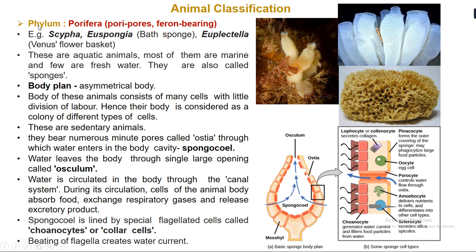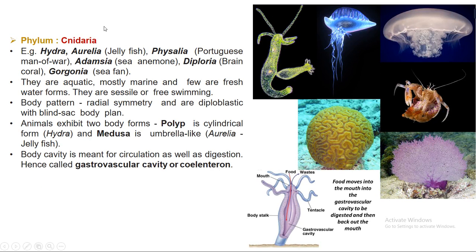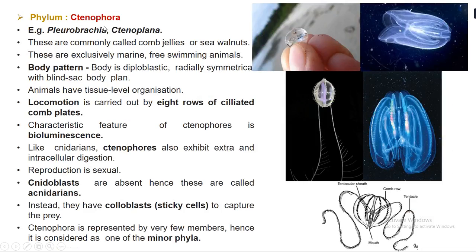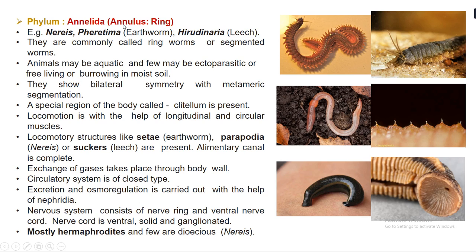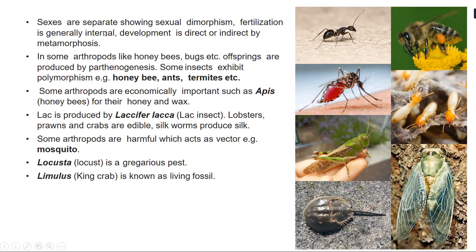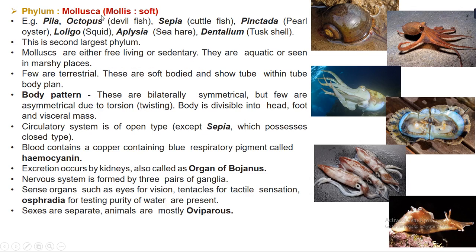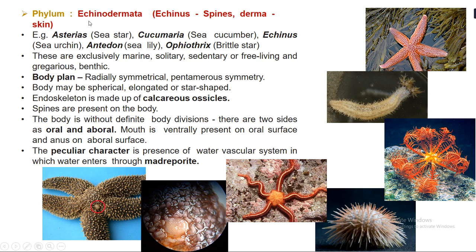We studied about some of the phylums included in this kingdom. The first phylum was Porifera, then Cnidaria, Ctenophora, Platyhelminthes, Aschelminthes, Annelida, Arthropoda, and then we studied about Mollusca and Echinodermata. These are the phylums we studied in the previous two sessions.